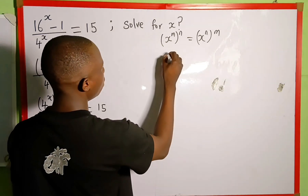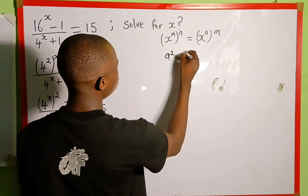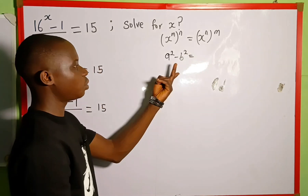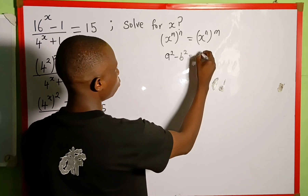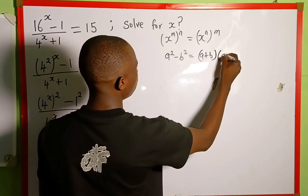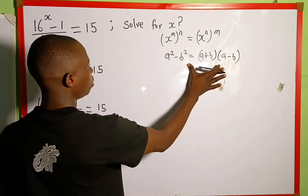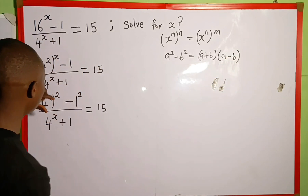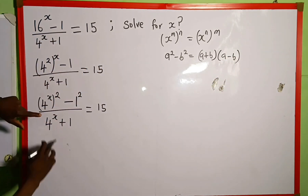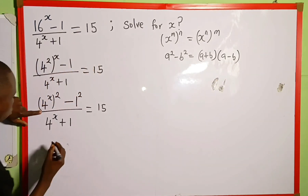Recall that when we have a to the power of 2 minus b to the power of 2, this can be simplified as a plus b multiplied by a minus b. So this is the property we are going to apply to the numerator so that we can rewrite it in this form.